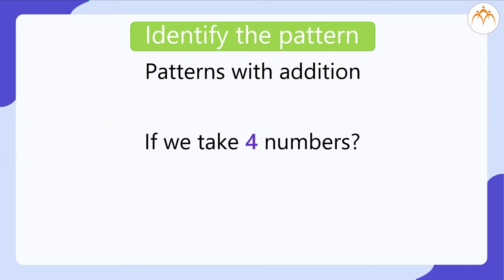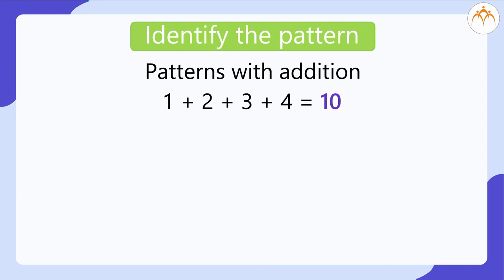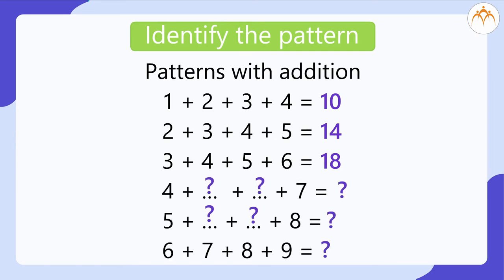If we take four numbers, then what will happen? Let us find the sum grows by 4 each time. 1 plus 2 plus 3 plus 4 is equal to 10. 2 plus 3 plus 4 plus 5 is equal to 14. 3 plus 4 plus 5 plus 6 is equal to 18. Can you complete this?